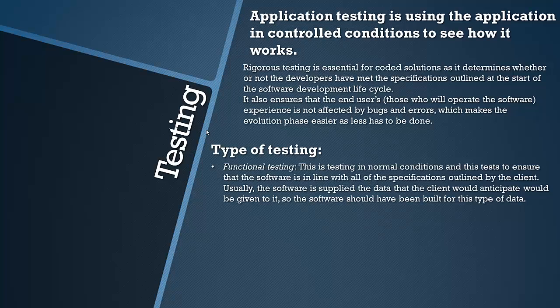The first one is functional testing, and this is testing in normal conditions to ensure that the software is in line with all the specifications outlined by the client. Usually this type of testing will be done first. This makes sure that everything asked of the developers by the client is met, and the software is supplied with the data that the client would anticipate would be given to it — the data the program has been designed to operate with. If you don't pass this test, the whole software is flawed.